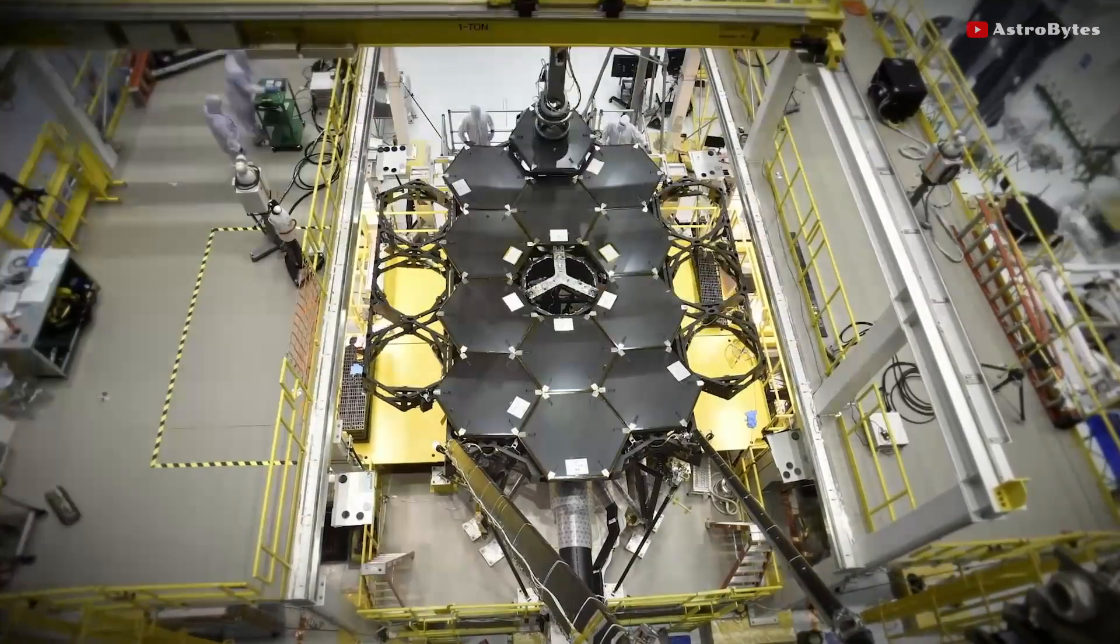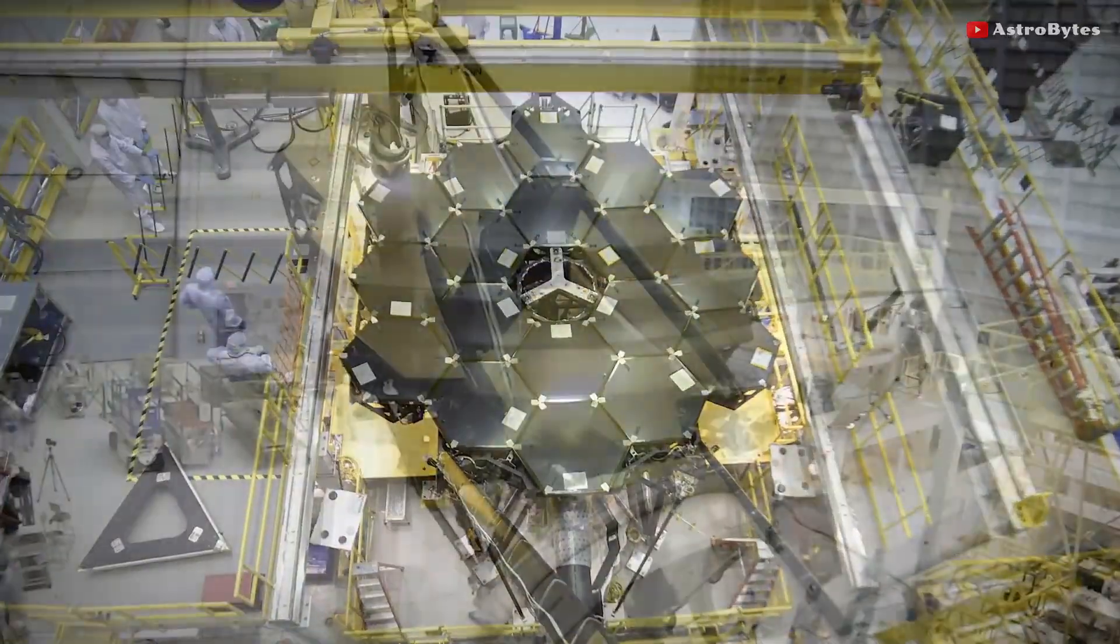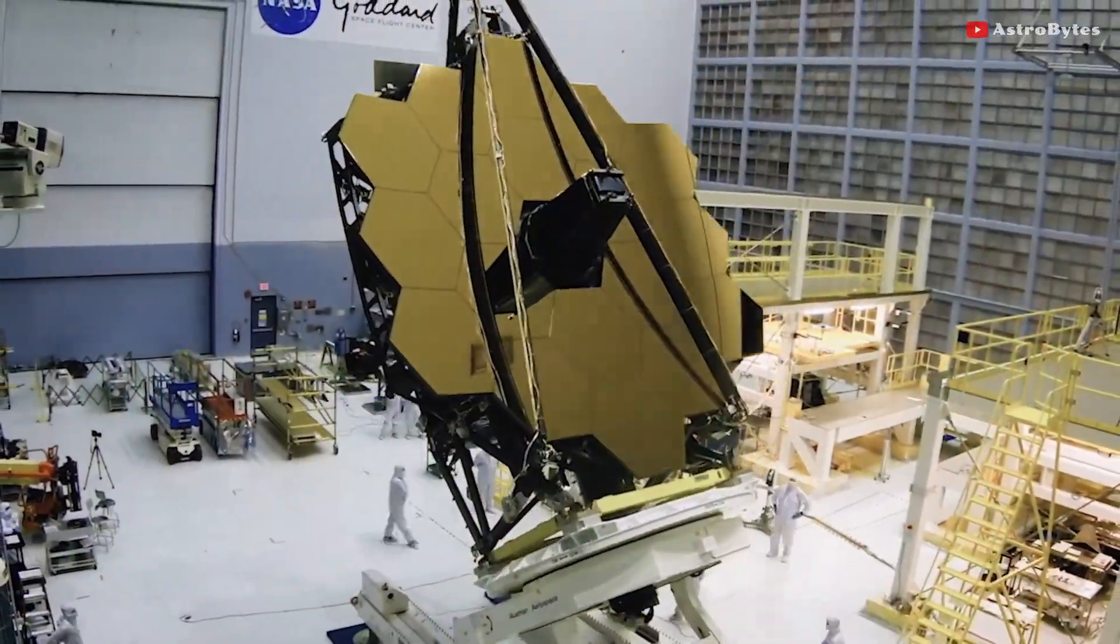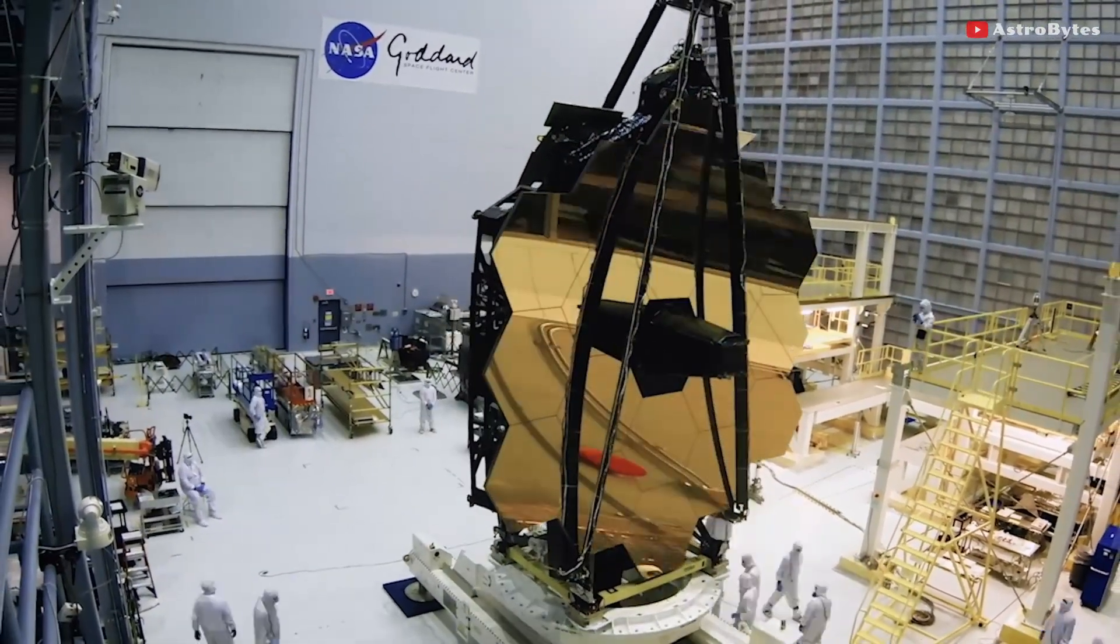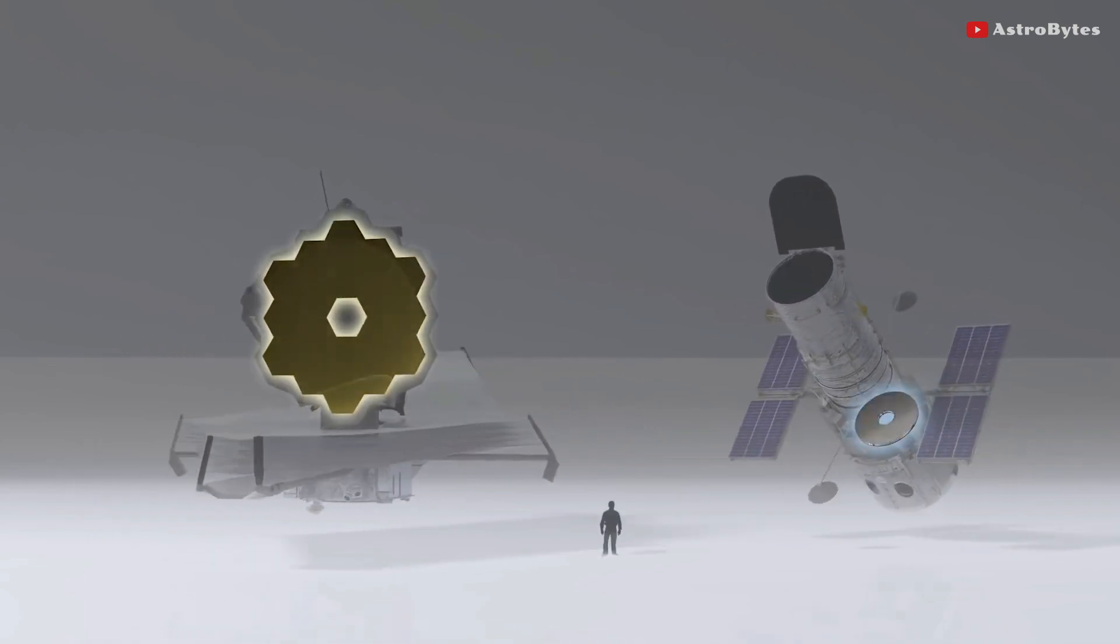The James Webb Telescope often gets called the replacement for Hubble, but we prefer to call it a successor. After all, Webb is the scientific successor to Hubble; its science goals were motivated by the results from Hubble.